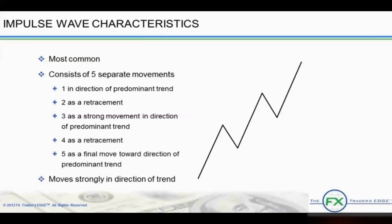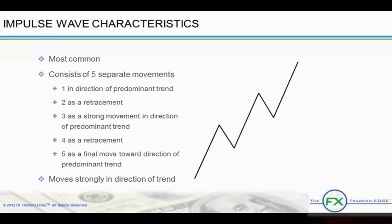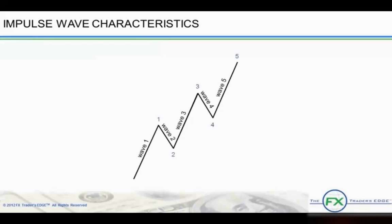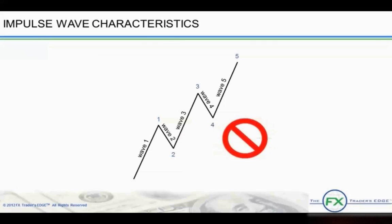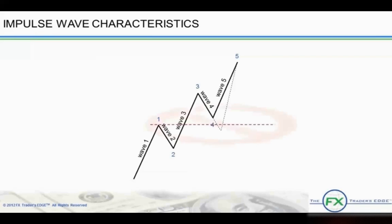Impulsive moves strongly in the direction of the trend. As a guideline, a rising impulse will start at or just after a major low. In a falling market, an inverted impulse will start at or just after a major high. This is an example of an impulse wave, the fundamental five-wave pattern. Note the three rules which cannot be broken: one, wave 2 never retraces more than 100% of wave 1; two, wave 3 is never the shortest wave; and three, wave 4 does not enter into the same price territory as wave 1.